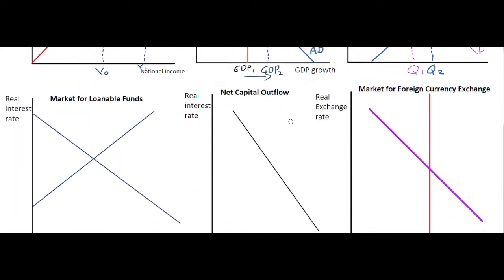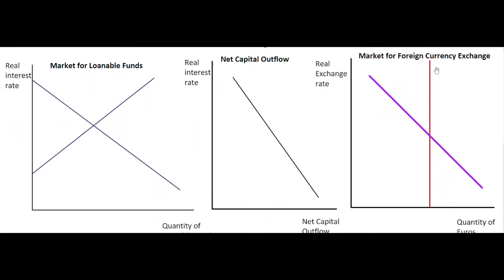Now let's trace the impacts through the market for loanable funds and the market for foreign currency exchange. In the market for loanable funds, we have the supply of loanable funds from savings and the demand for loanable funds from investment. Where supply equals demand, we get the real interest rate R and the quantity of loanable funds Q1, with an initial equilibrium at R1.